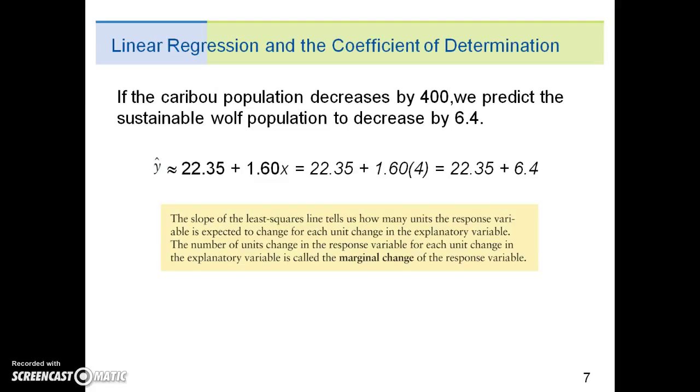The slope of the least-squared line tells us how many units the response variable is expected to change for each unit change in the explanatory variable. The number of units changed in the response variable for each unit change in the explanatory variable is called the marginal change of the response variable.